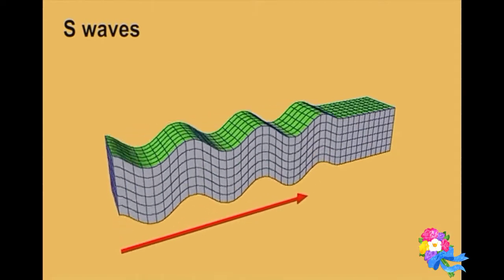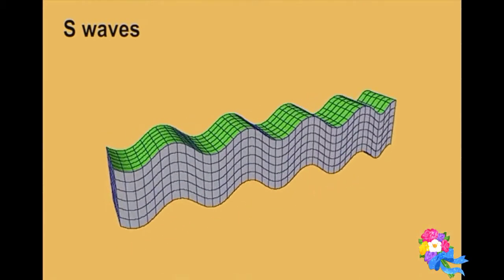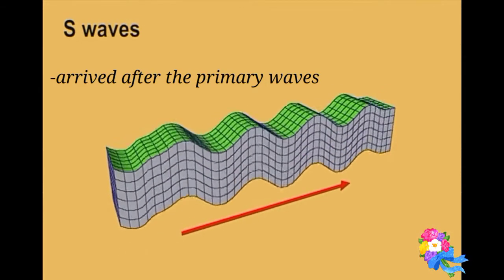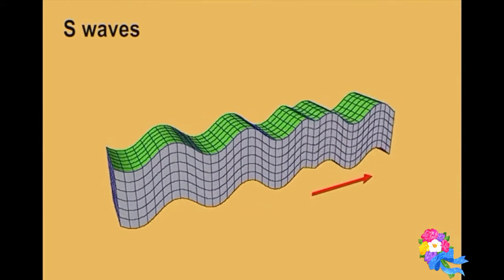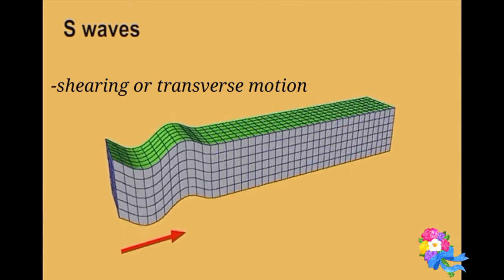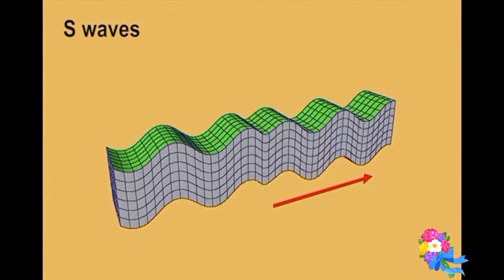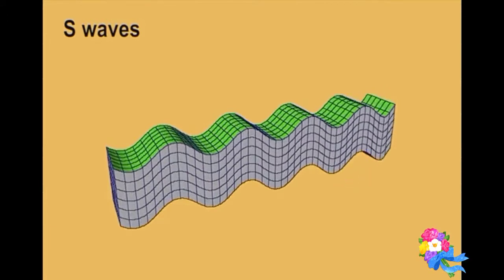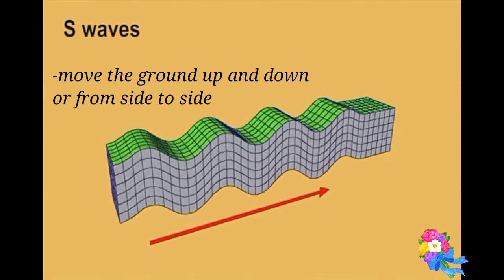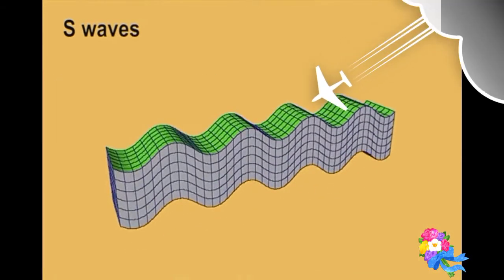Secondary waves, or S waves, are called secondary waves because they always arrive after the primary waves at seismic recording stations. These seismic waves shake or move the ground in a shearing or transverse motion that is perpendicular to the direction of travel of the waves. These are waves that move the ground up and down or from side to side, and they can travel only through solid materials.